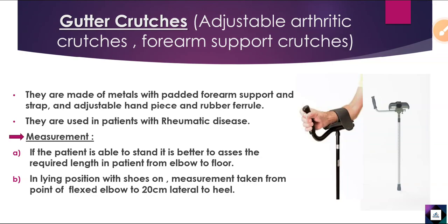The next section is gutter crutches, also called adjustable arthritic crutches or four-arm support crutches — three names you need to know. They are made of metal with a padded forearm support, strap, adjustable handpiece, and rubber ferrule. From an MCQ point of view, they are used for patients with rheumatic disease.